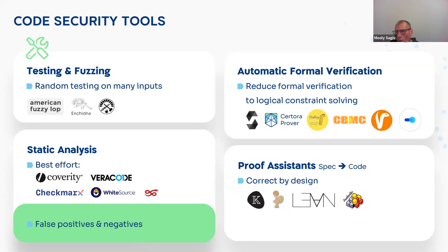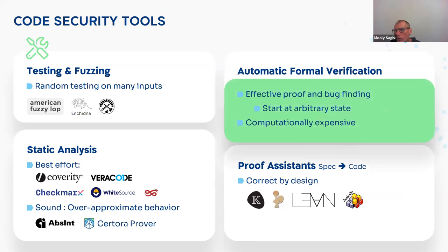The third technology — and this is what we're going to hear about today — is the Certora Prover. It's called automatic formal verification, sometimes referred to as deductive verification. The idea is that you check your code not on an initial state or an arbitrary state: you compile your code into a mathematical formula and then use a solver for that formula to find bugs. There are open source tools like Dafny, SMT Checker by the Ethereum Foundation, and CBMC, but Certora Prover checks the bytecode, and the difference is that it's more scalable and runs on much larger code.